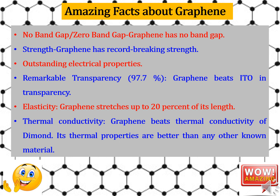Now we discuss the amazing facts associated with graphene. Graphene has no band gap — it is a zero band gap material. Graphene has record-breaking strength. Graphene possesses excellent electrical properties. Graphene has remarkable transparency of the order 97.7%, beating indium tin oxide-based transparent conducting oxides in transparency. Graphene can be stretched up to 20% of its original length. In thermal conductivity, graphene beats diamond, with thermal properties better than any other known material. Due to these outstanding properties, a vast variety of practical applications appear possible, including new materials, innovative electronics, and graphene transistors predicted to be substantially faster than today's silicon transistors, resulting in more efficient computers.